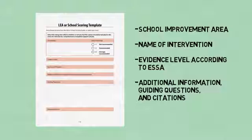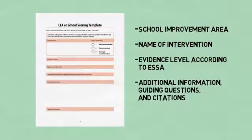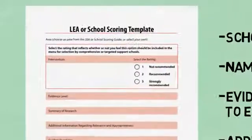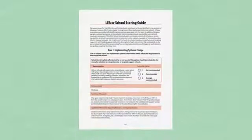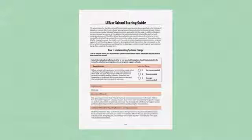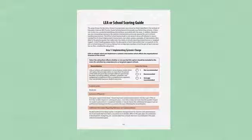After considering the information available, team members individually rate each intervention as not recommended, recommended, or strongly recommended. The LEA or school scoring guide provides samples of interventions based on five areas which research shows as being important to school improvement.